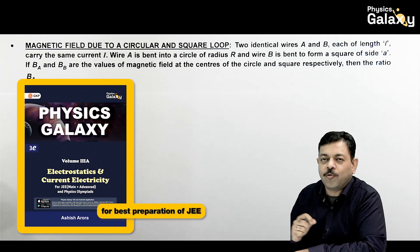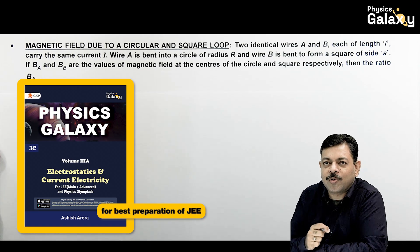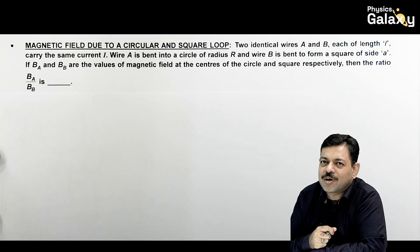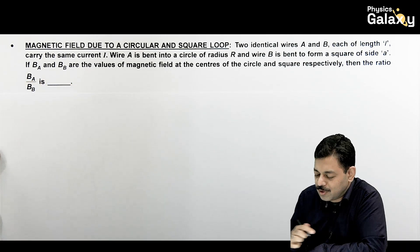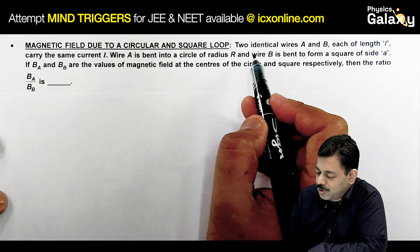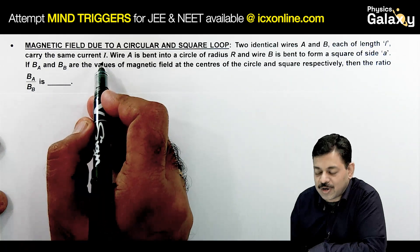One more such case. The previous cases were all about careful application of standard results useful in handling such questions. Here it says magnetic field due to a circular and a square loop. In this case we are given two identical wires A and B, each of length l carrying same current i. Wire A is bent into a circle of radius r, and B is bent to form a square of side a.